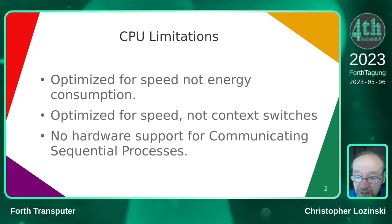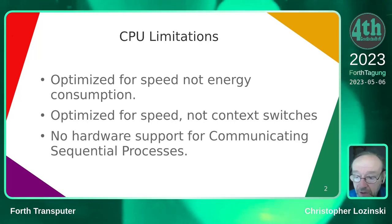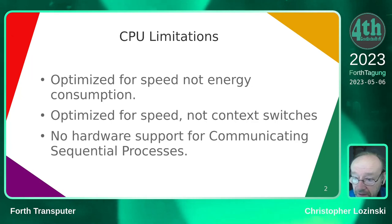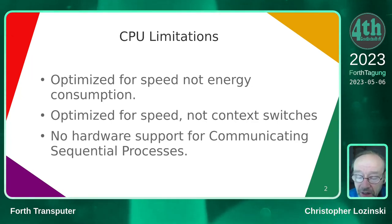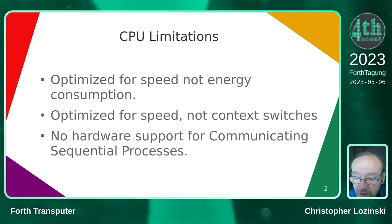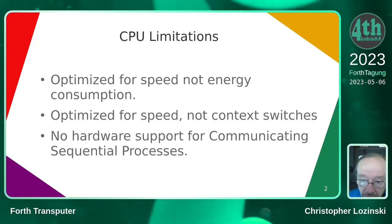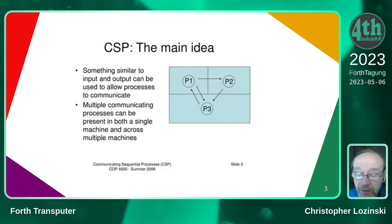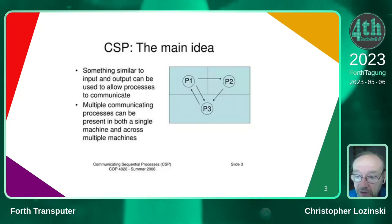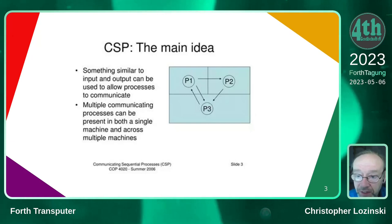I think one of the reasons FORTH is so strong in real-time control is because you need really fast context switches. The other place that needs context switches is communicating sequential processes. The mainstream CPUs do not have any support for communicating sequential processes — the transputer did.